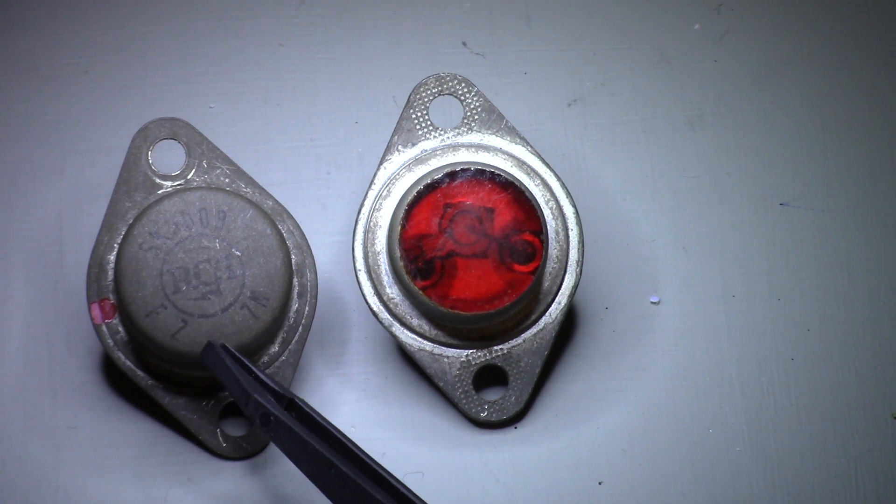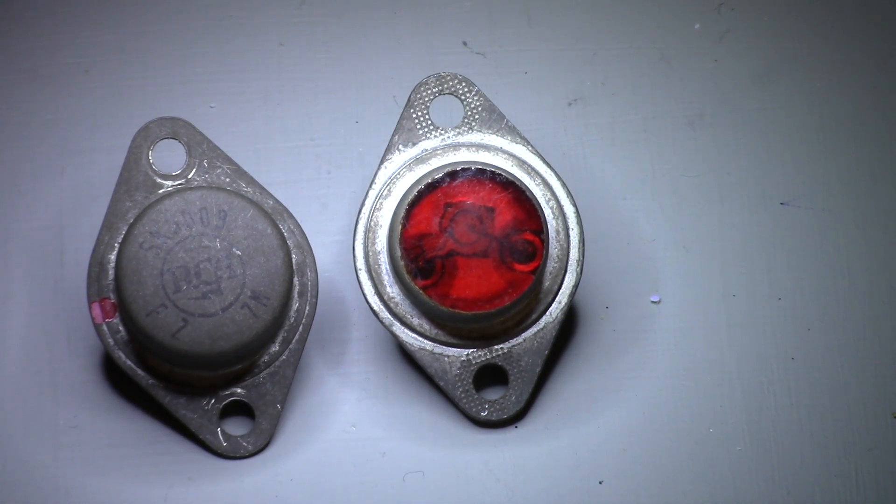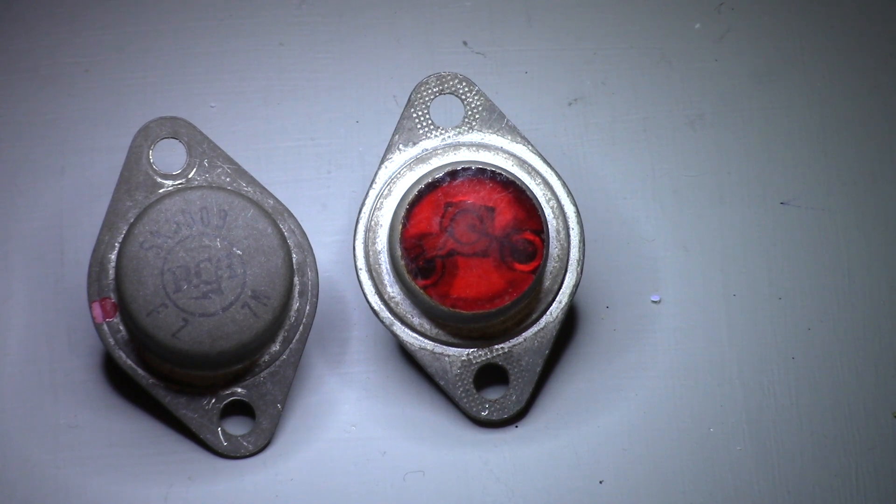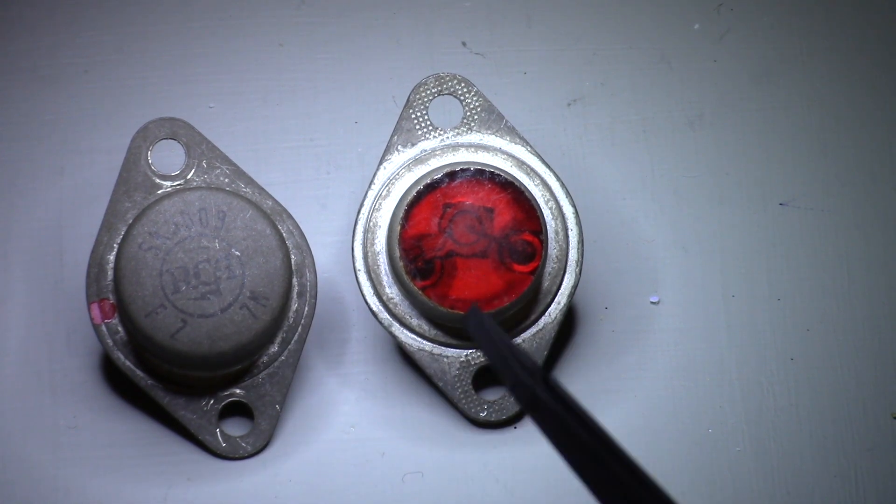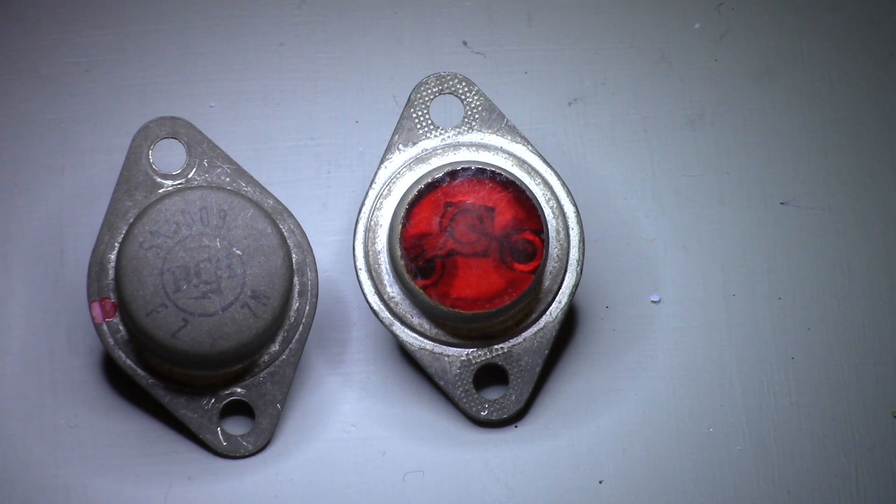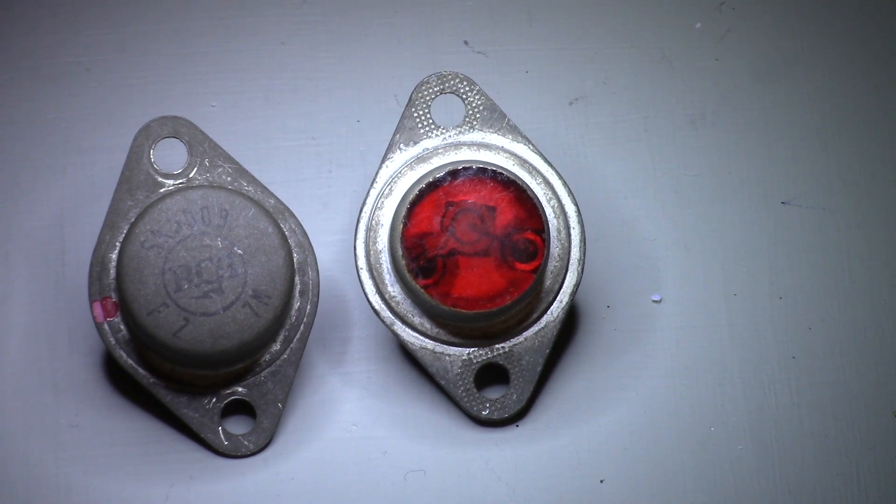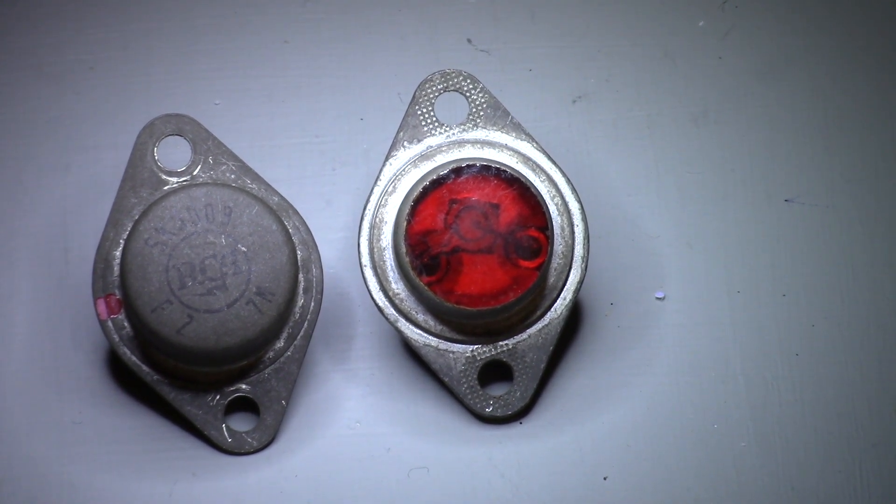On the left you see an ordinary germanium power transistor from the 1960s. This is an SK3009 in a TO3 enclosure, very common for the first generation of power transistors. And on the right you see what is essentially the same thing with a window in it. Apparently Cordova got hold of some power transistors where the top of the cover had been whacked off and replaced with a red window. The thing that intrigued both me and my father about this is it's a power transistor where you can see inside. Let's see if we can look a little more closely.